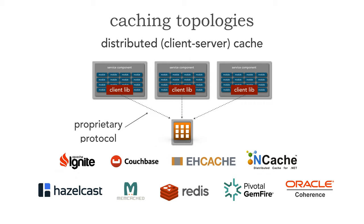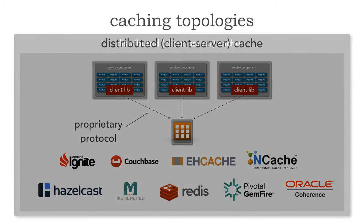That access happens through some sort of low-level proprietary protocol, usually a socket-based protocol for performance. Basically every kind of cache technology supports a distributed or client-server cache. Let's take a look at Apache Ignite to see what this might actually look like, and we can compare it to lesson 76 to see the coding differences between a single in-memory data grid versus a distributed or client-server cache.